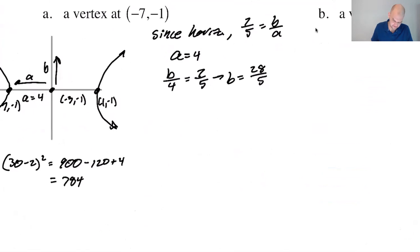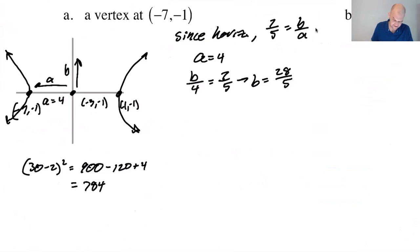All right. So, we know it's horizontal because of this. So we know X comes first. We know the center is at (-3, -1). So it's going to be (X+3)² minus (Y+1)². Both those are going to be over something. And it's going to equal 1. A always goes first as 4. So this is 16.